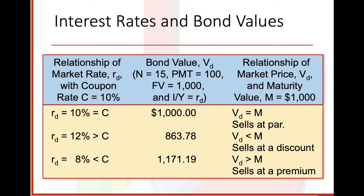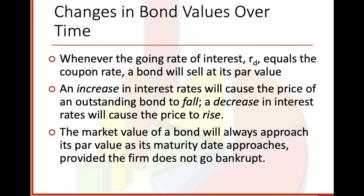Changes in bond values over time: whenever the going rate of interest equals the coupon rate, the bond will sell at par. An increase in interest rates will cause the price of an outstanding bond to fall. A decrease in interest rates will cause the price to rise. The market value of a bond will always approach its par value as its maturity date approaches, provided the firm does not go bankrupt.